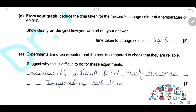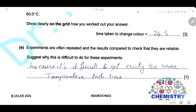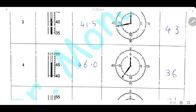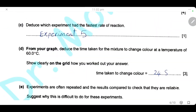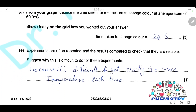Experiments are often repeated and the results compared to check that they are reliable. Explain why it is difficult to do this for this experiment — we cannot repeat the experiment many times and take the average to make reliable results. As we can see, the heating targets are about 40, 45, 50°C, so it is difficult to adjust or to get exactly the same temperature each time the experiment is repeated.